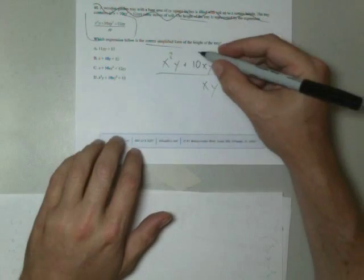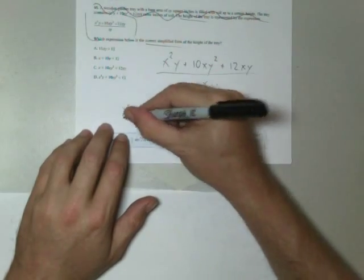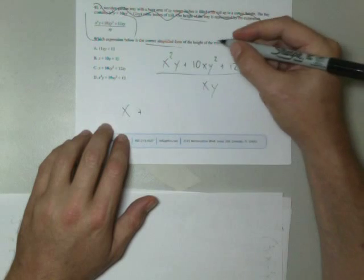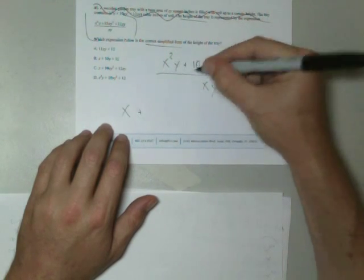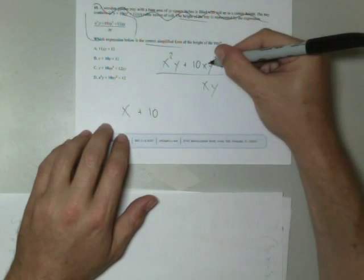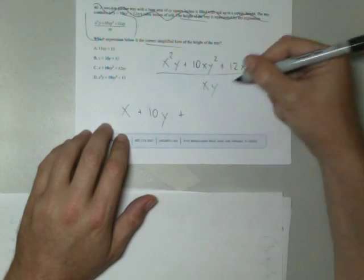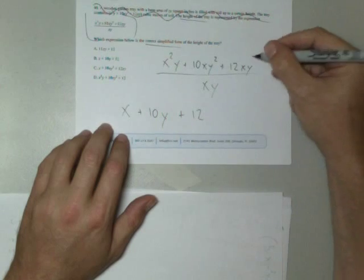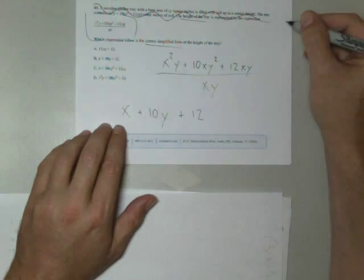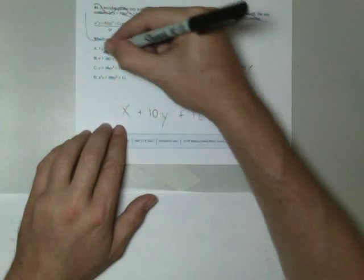When I divide this, x² divided by x is x and the y's cancel. Plus, 10 divided by 1 is 10. x's cancel. y² divided by y is y. Plus 12. x cancels. y cancels. And this is choice B.